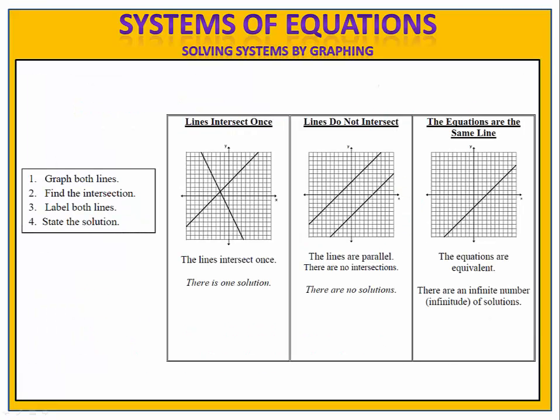One way that we can do this is by graphing the system of equations. We graph both of the lines and we find the points that they have in common. Because the graph shows the solution set to each of the equations, the values in common are where the graphs intersect. Where the red dot is on the screen, that's the x and y pair that is in both solution sets — the values that would make each of those equations true simultaneously. There are no other pairs of numbers that would do this.